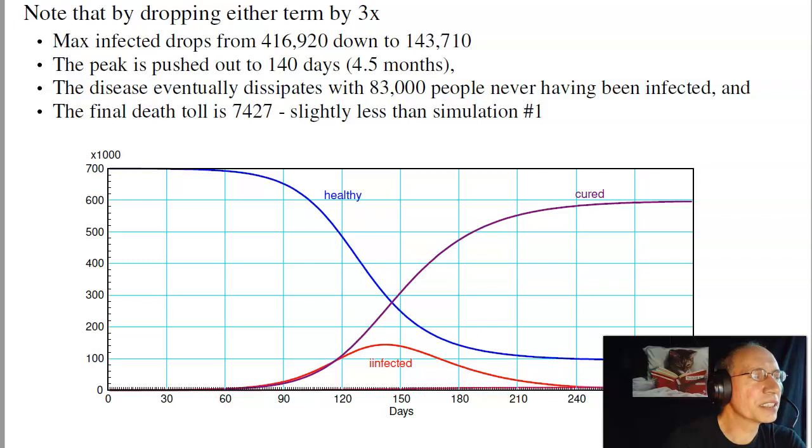And eventually the disease dissipates after 83,000 people, or leaving 83,000 people uninfected. And the death toll drops from about 10,000 down to about 7,000. That's if you reduce either term by three times.